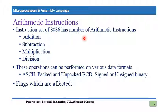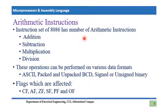One important thing about arithmetic instructions is their effects on flags. Whenever instructions like addition, subtraction, multiplication, and division are performed inside the microprocessor, some status flags change. Those flags are: carry flag, auxiliary flag, zero flag, sign flag, parity flag, and overflow flag — six status flags in total — and we will see these effects in the coming slides.